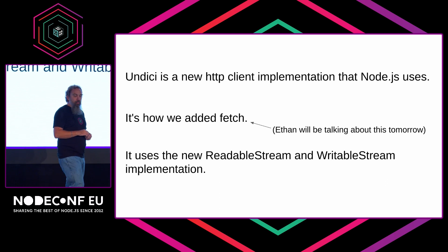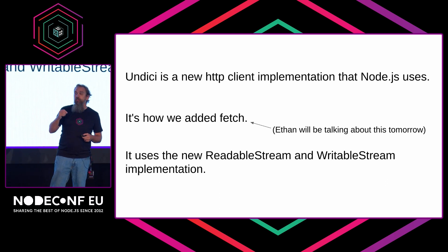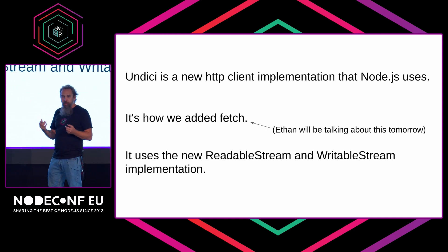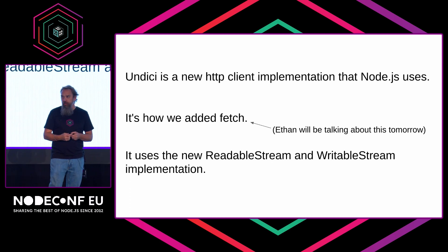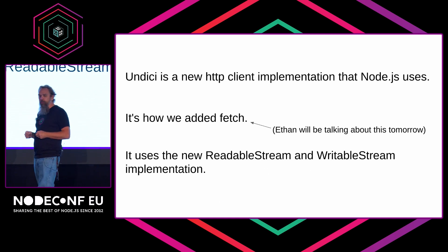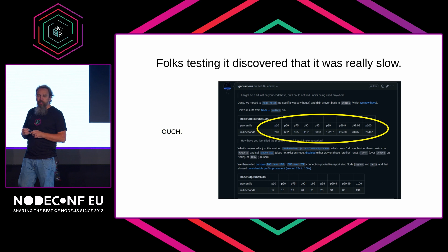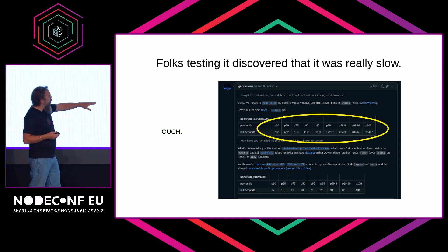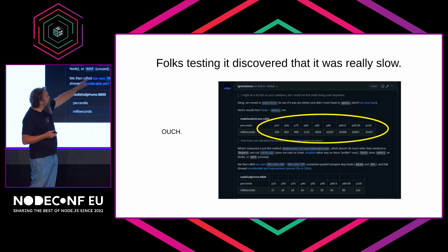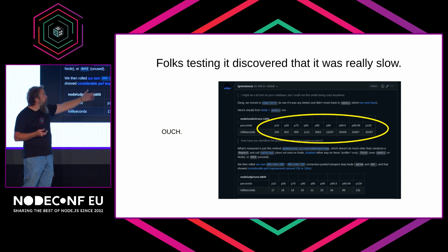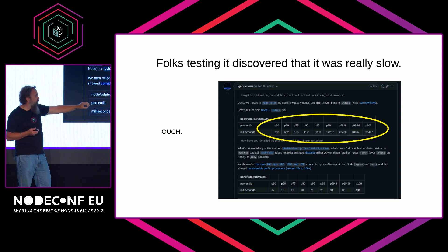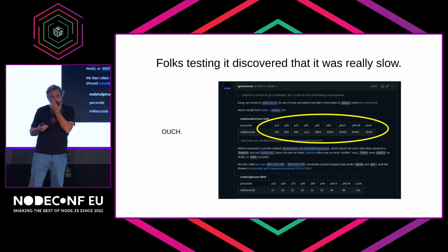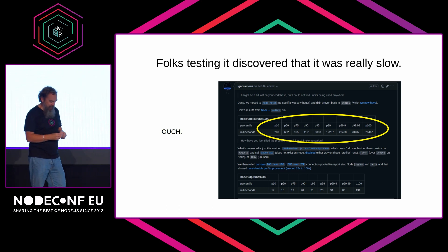The fetch implementation makes use of the new ReadableStream and WritableStream — the Web Streams APIs. Specifically, when you create a new Request or Response object, you're creating these WritableStream or ReadableStream instances, and that's key — particularly the WritableStream part. Folks testing this discovered that just creating these objects was really slow. Looking at the p99 percentile, just creating a Request object was taking about 12,000 milliseconds, whereas a standalone simple version was only taking 25 milliseconds. Slight disparity — kind of an ouch moment.